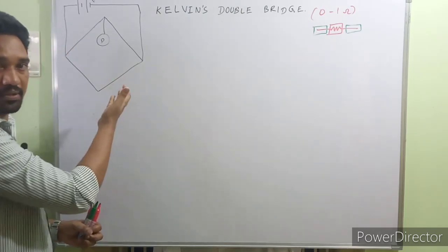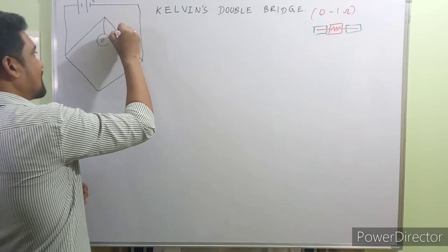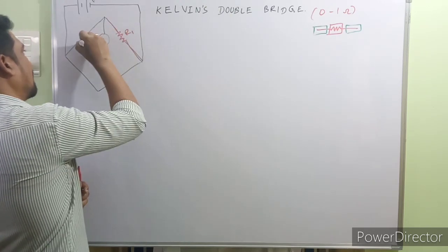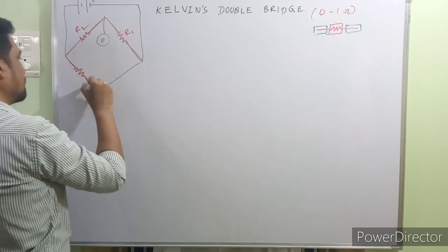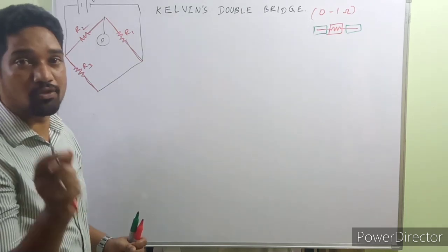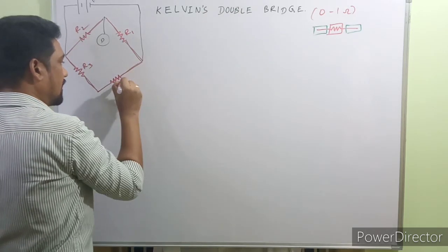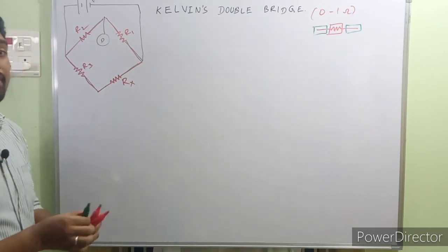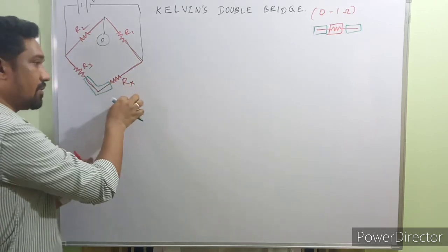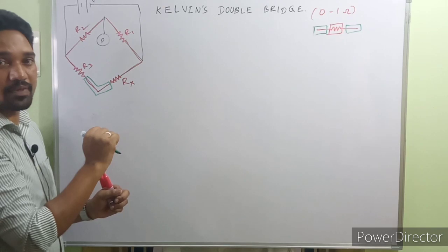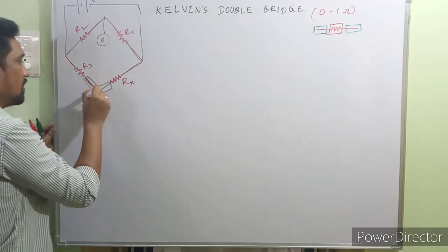Coming back to the Wheatstone bridge layout, it's simply a Wheatstone bridge. There's a detector D and a DC supply voltage V. We'll have standard resistances: R1 connected here, R2 connected here, R3 connected here, and the unknown low value resistance Rx ranging from 0 to 1 ohm connected here. The connecting lead from one point to another introduces some resistance that has to be eliminated. The main objective of the Kelvin's double bridge is to eliminate the interference of lead resistances.